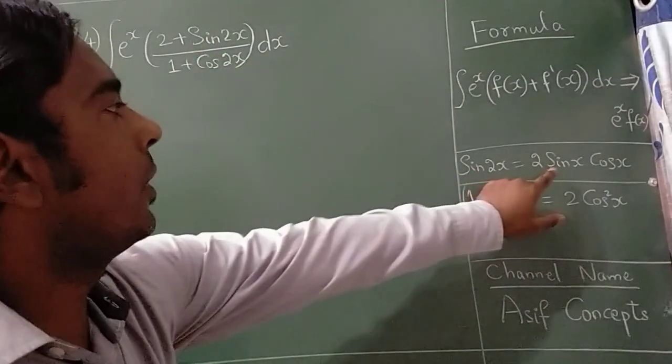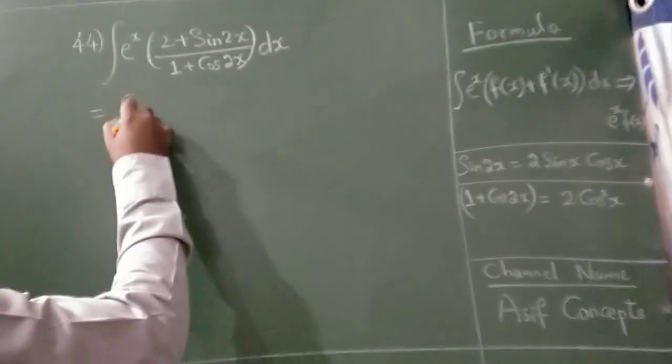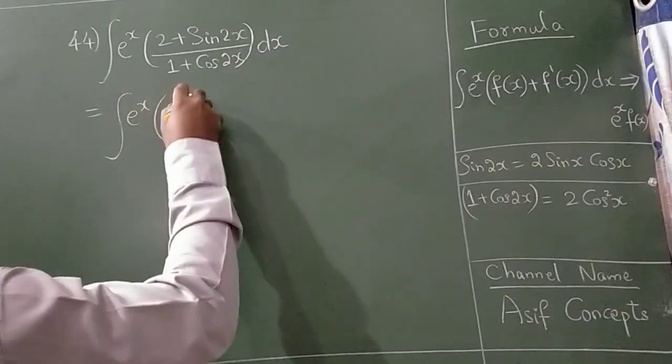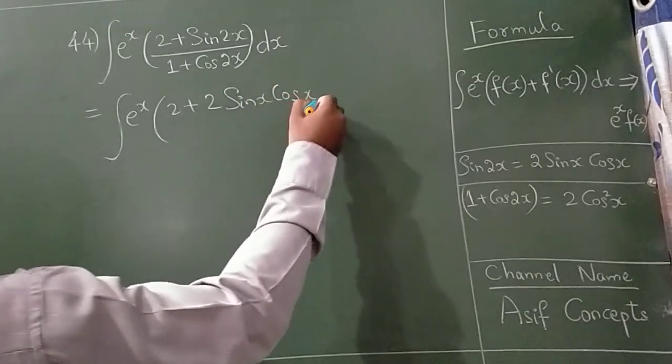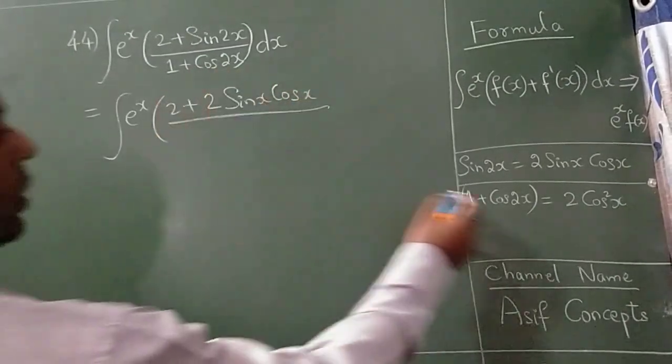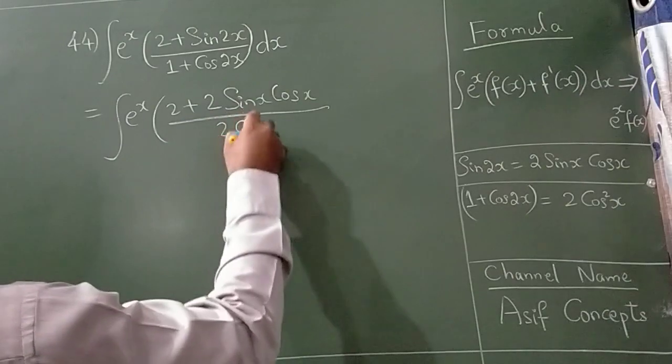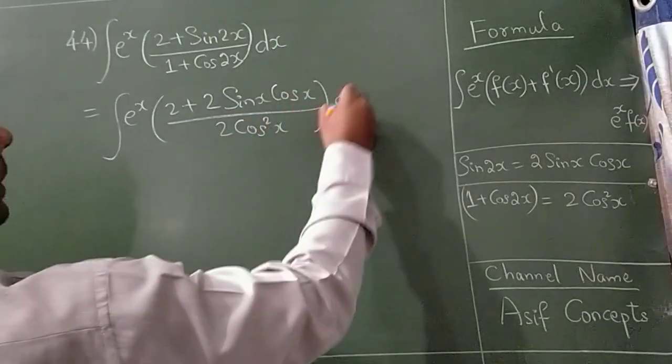Now sin 2x formula is here. So I will write here e raise to x, 2 plus 2 sin x into cos x. Okay, 1 plus cos 2x is 2 cos square x into dx.